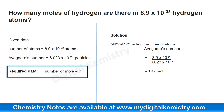Let's put values into the formula to find out the number of moles of hydrogen. The number of atoms given is 8.9 × 10²³ atoms, divided by Avogadro's number. We know that Avogadro's number is equal to 6.023 × 10²³. So 8.9 × 10²³ divided by 6.023 × 10²³ equals 1.47 moles. This is how we easily found out the number of moles of hydrogen.